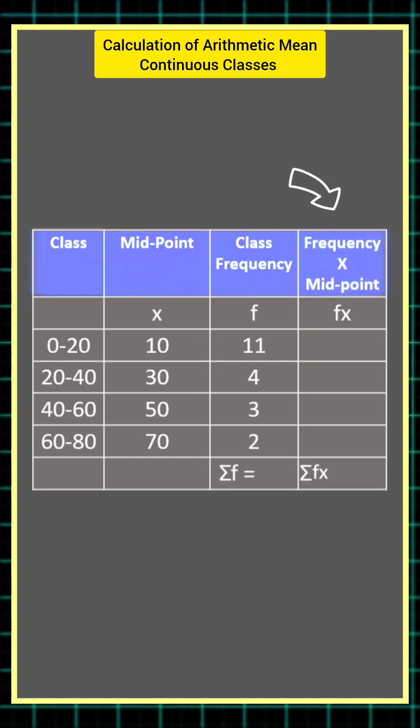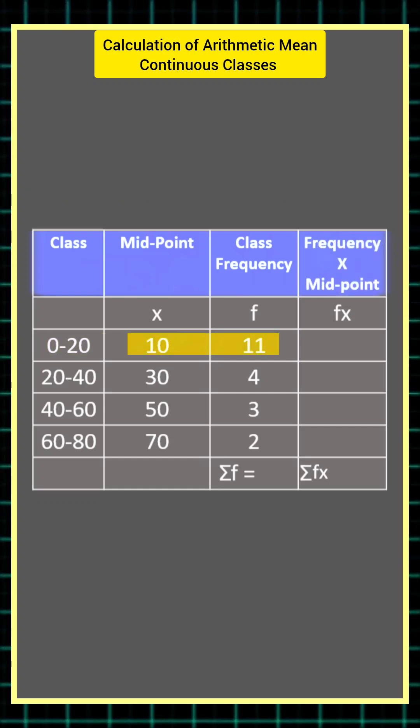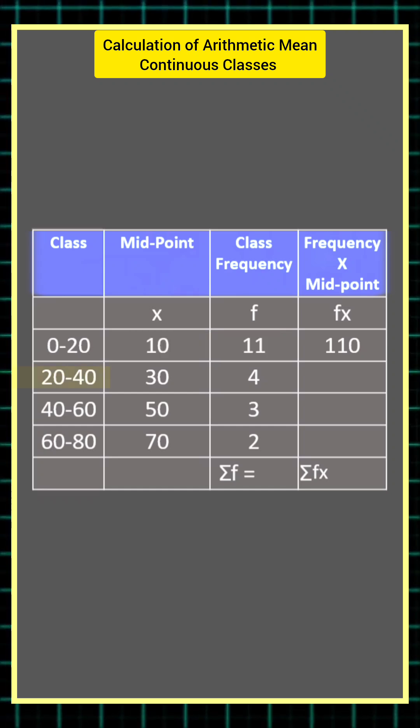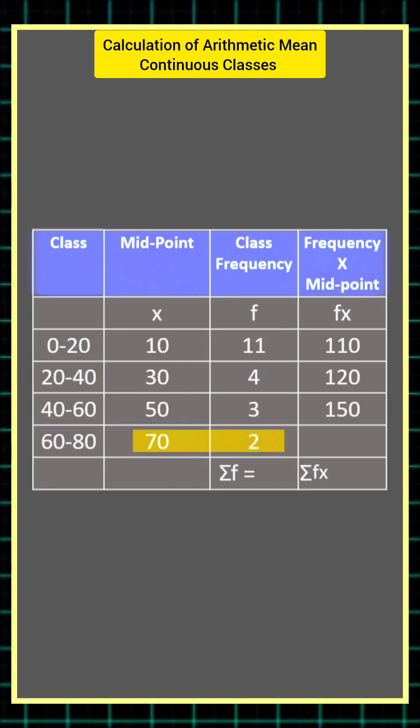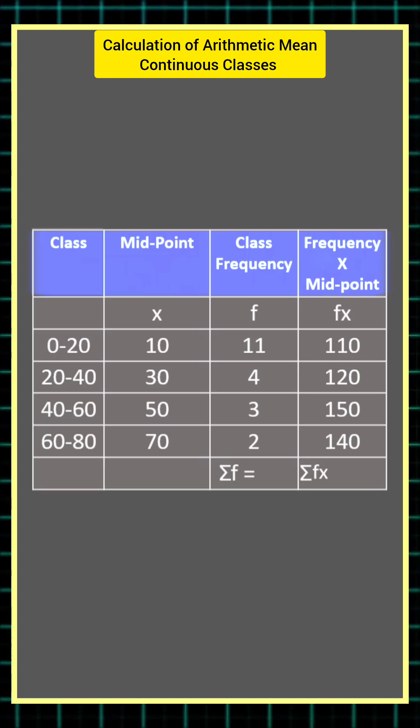Next step is to multiply frequency with midpoint. 10 times 11 is 110, 30 times 4 is 120, 50 times 3 is 150 and 70 times 2 is 140.